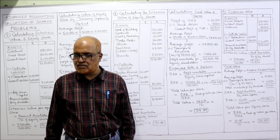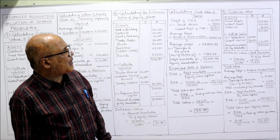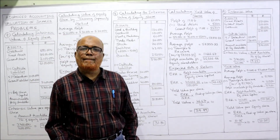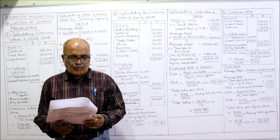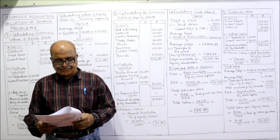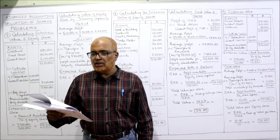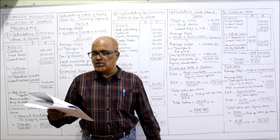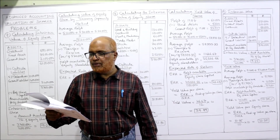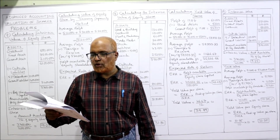That's it — the 8th problem completed. Now the 9th problem: on March 31st 2005, the balance sheet of a limited company disclosed the following.